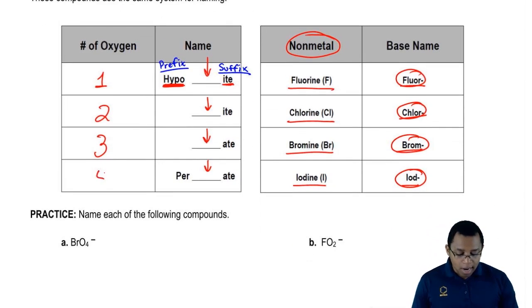Then finally, when we get to four oxygens, we get a whole new prefix, 'per'. We'll still use one of these base names depending on which halogen is present, and then the ending will stay '-ate'.